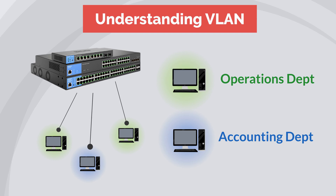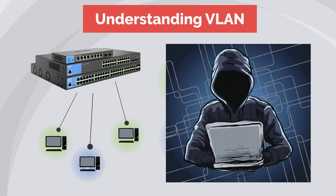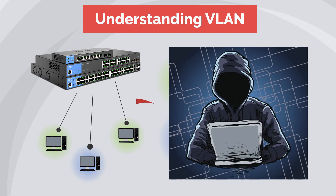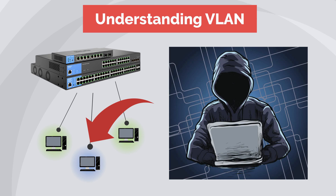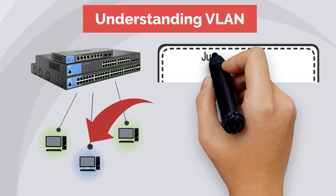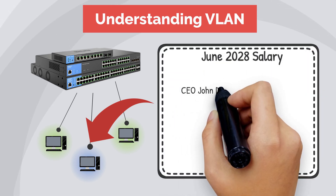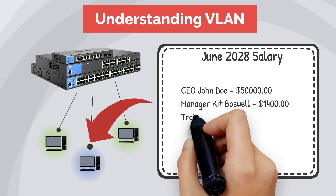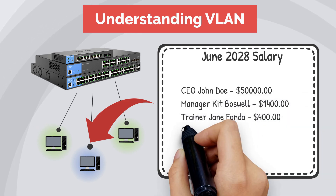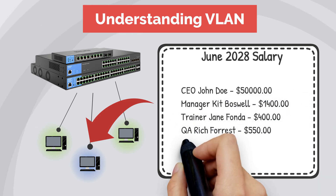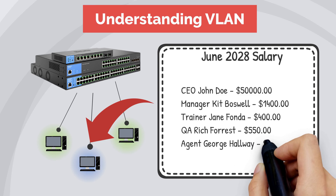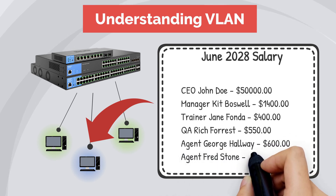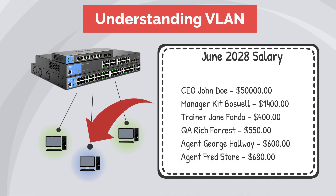The problem happens when other departments, like operations for example, will access — legally or illegally — the files that the accounting department keeps. This could become a big problem, especially if people other than the accounting department learn the salary of all the employees within the organization.